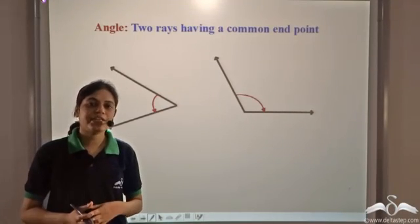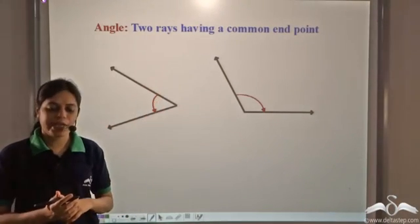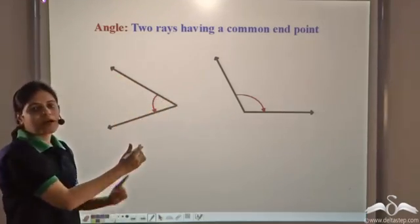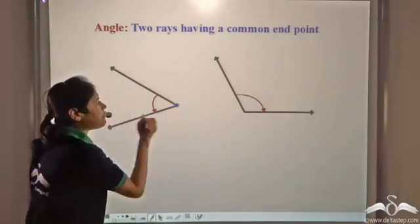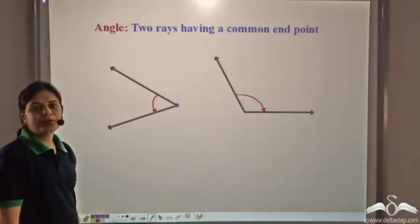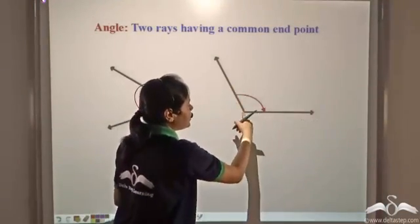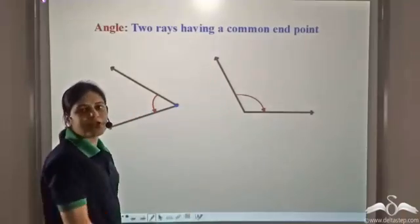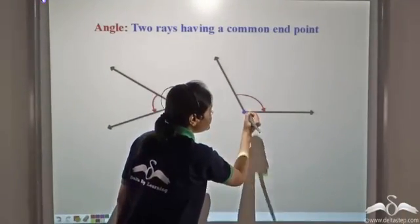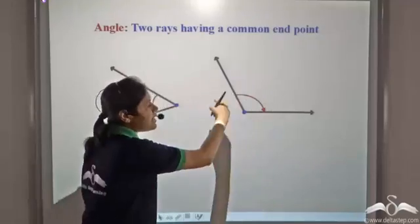We know that an angle is formed when two rays have a common end point. So these two rays come together and have a common end point to form this angle. Again in this case, this ray and this ray come together and meet at this common end point to form this angle.